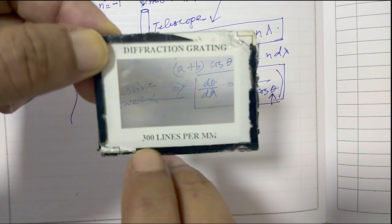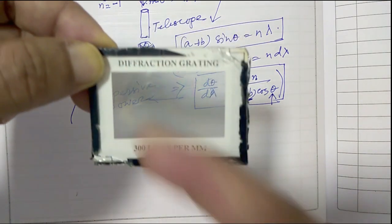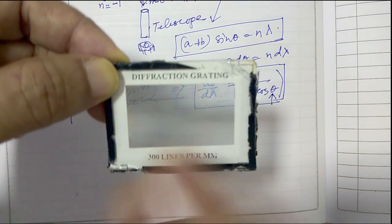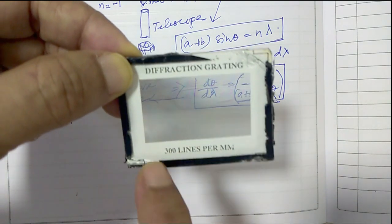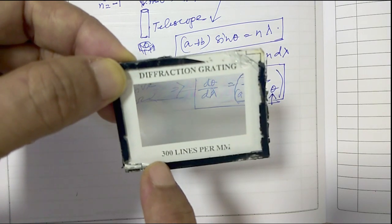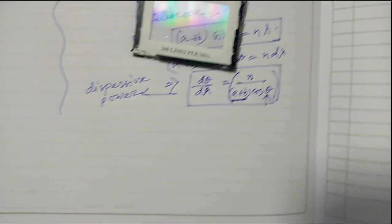So in this glass plate, within one millimeter width, how many lines are there? 300 lines. As I was showing earlier, here is our distance a plus b, and that's your grating element.